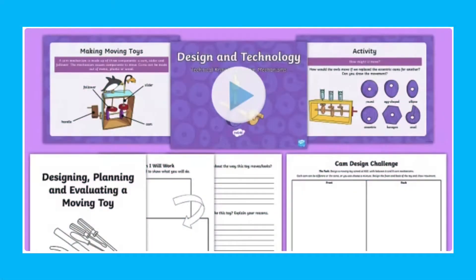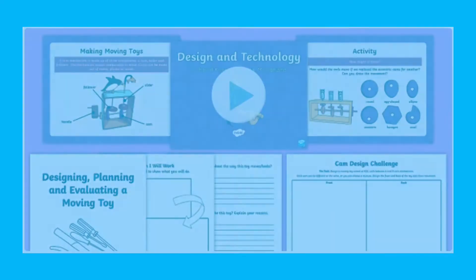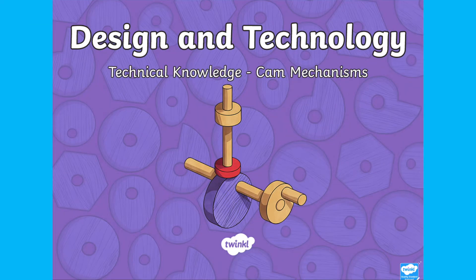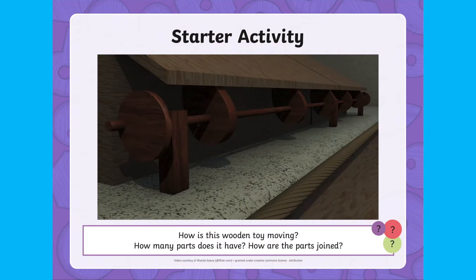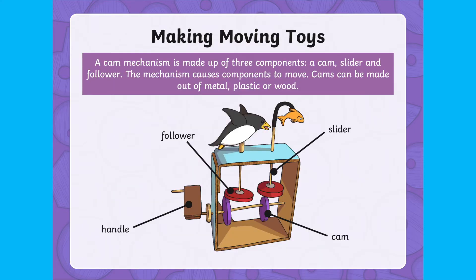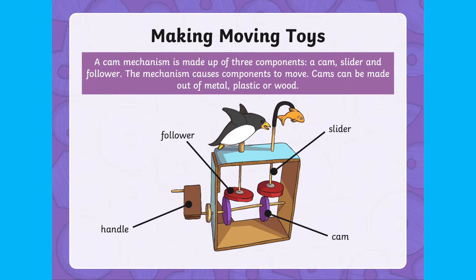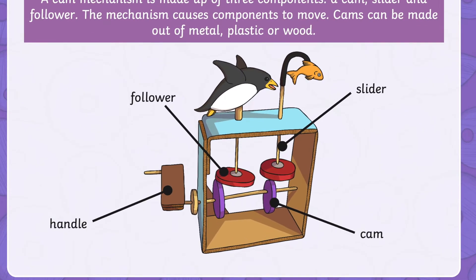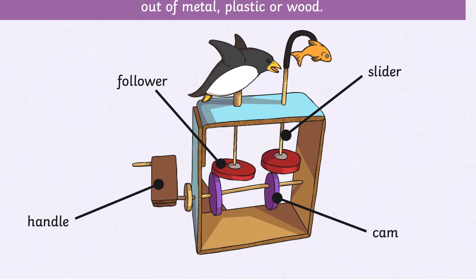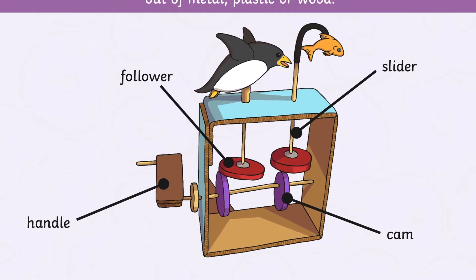Let's take a look at this moving toys cam mechanism lesson pack. A mechanism can be defined as any tool used to convert or control motion, or transmit control or power. In this cam mechanism PowerPoint you can see that a cam mechanism is made up of three components: a cam, a slider and a follower, and these three pieces help to make the object at the top of the slider move.